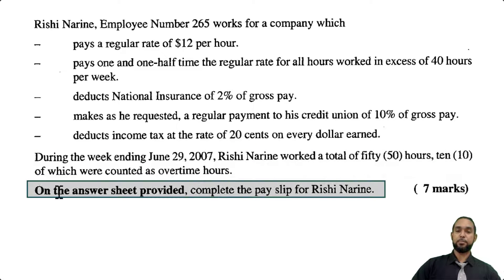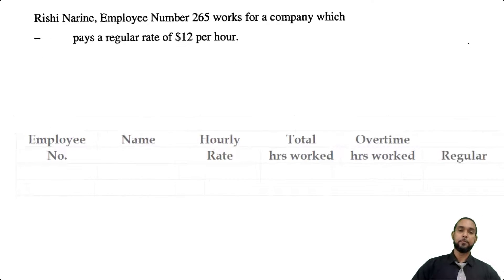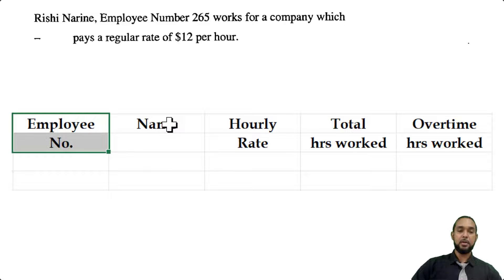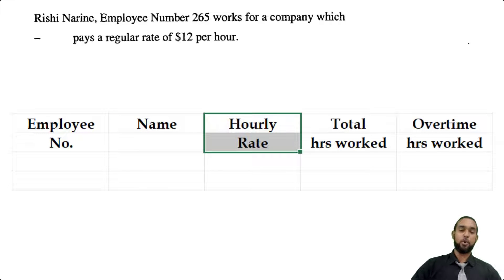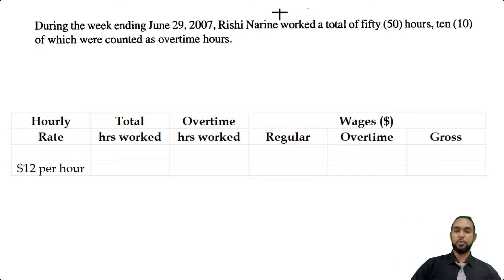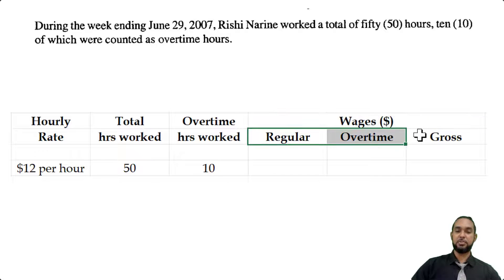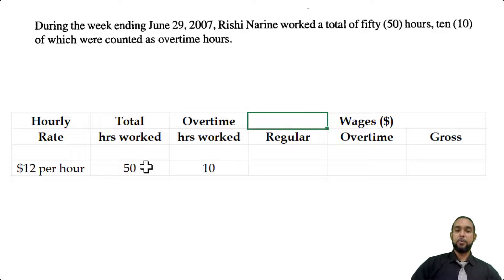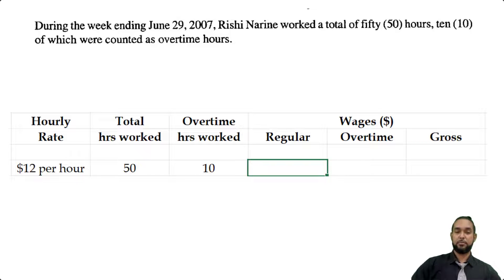We need to complete the pay slip for Rishi Narayan. The employee number is 265, name is Rishi Narayan, and the hourly rate is $12 per hour. Rishi worked 50 hours total, 10 of which were overtime, meaning 40 regular hours. The regular pay is 40 × $12 = $480. The overtime wages: one and a half times $12 is $18, so 10 × $18 = $180.